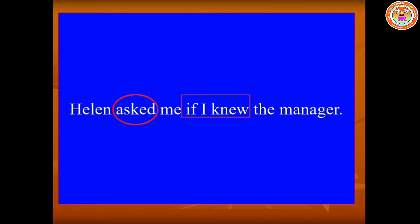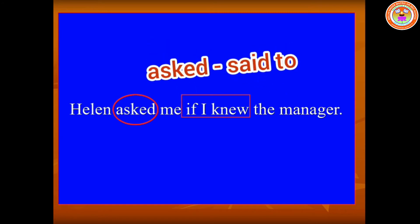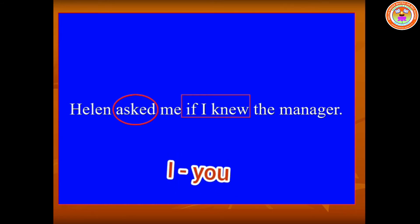Next one: 'Helen asked me if I knew the manager.' Dear children, in this sentence 'if' is the conjunction. From that we can understand this is a yes or no type of question. We have to remove the conjunction 'if' and add a comma and quotation mark. 'Asked' should be changed as 'said to'. The pronoun 'I' refers to 'me', so 'I' should be changed into 'you'. 'Knew' is the past tense; 'know' is the present form, so we have to write 'do + know'.